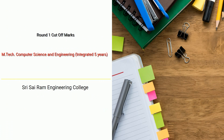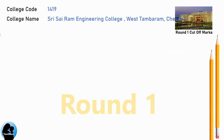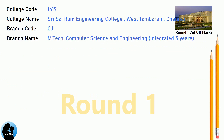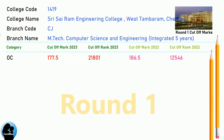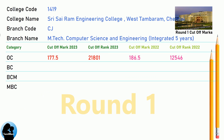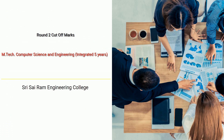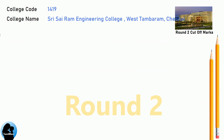DNA Round 1 Cut-off for Shri Sairam Engineering College in M.Tech Computer Science and Engineering Integrated 5 years. DNA Round 2 Cut-off for Shri Sairam Engineering College in M.Tech Computer Science and Engineering Integrated 5 years.